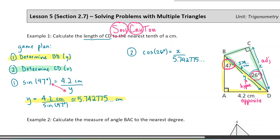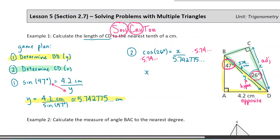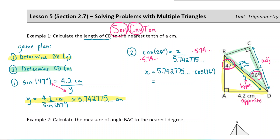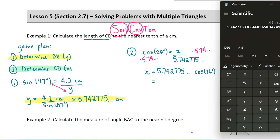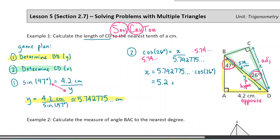This time we multiply both sides by that number, giving us X equals 5.742775 times cosine of 26°. Since I still have that value in my calculator, I just press multiply and then cosine of 26 degrees. I get approximately 5.2. So my final answer is 5.2 centimeters.